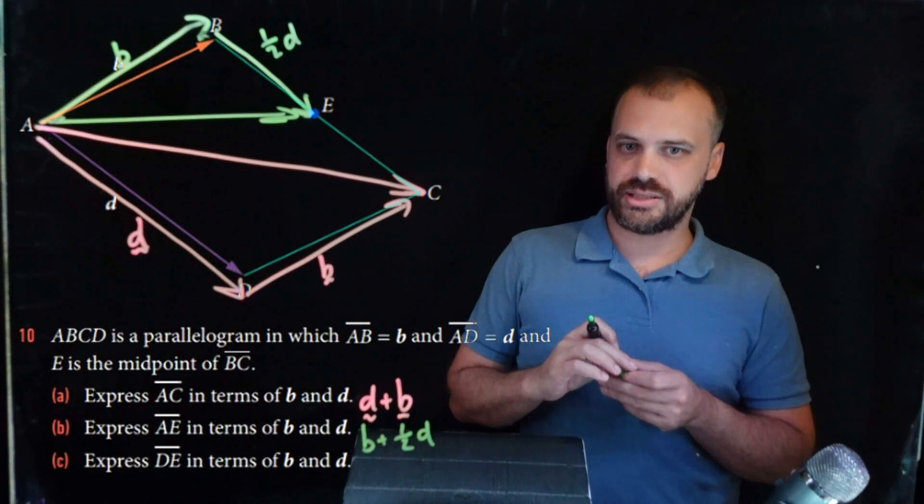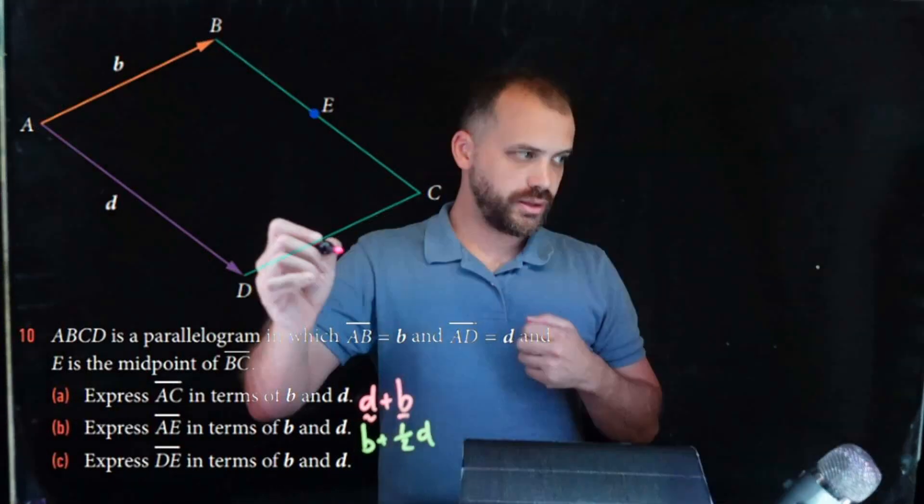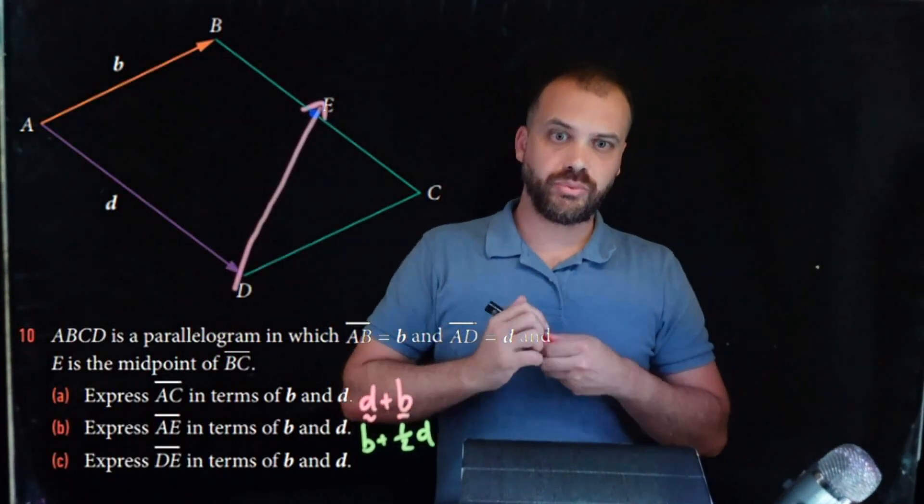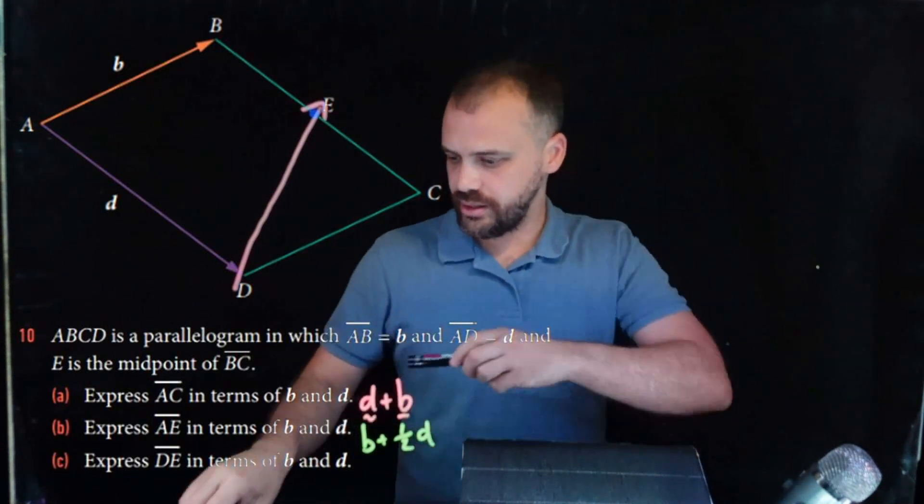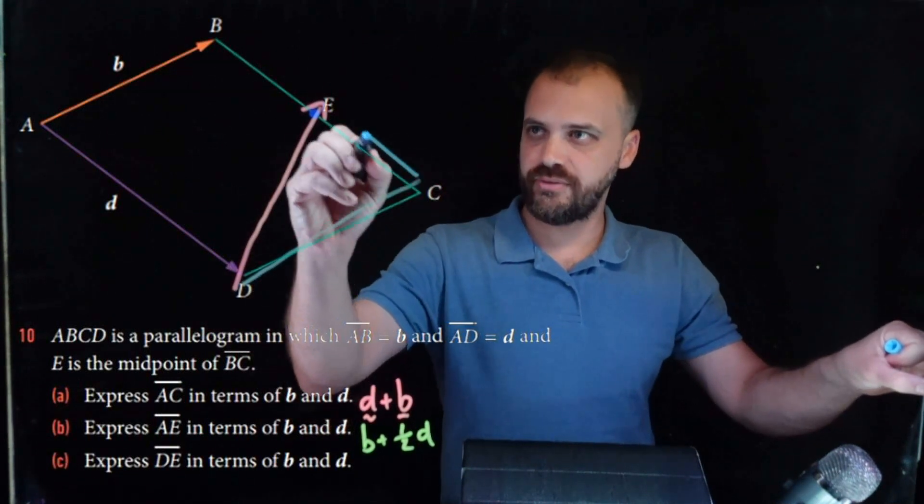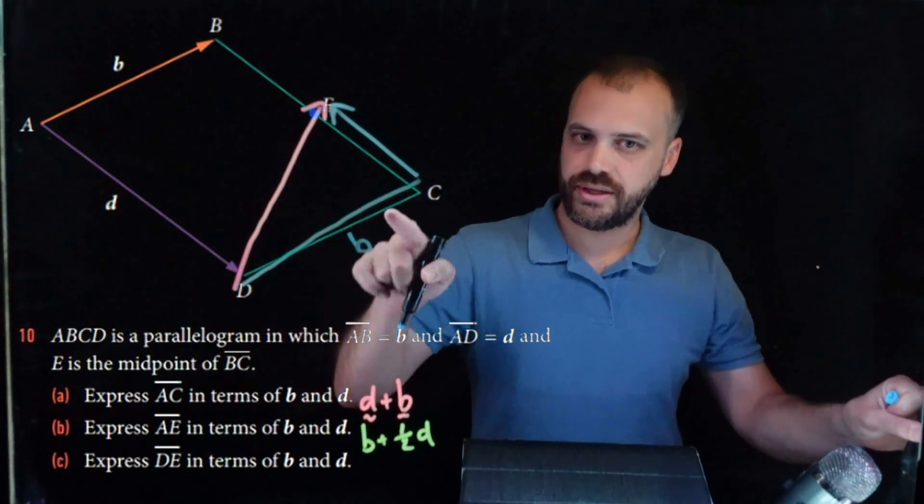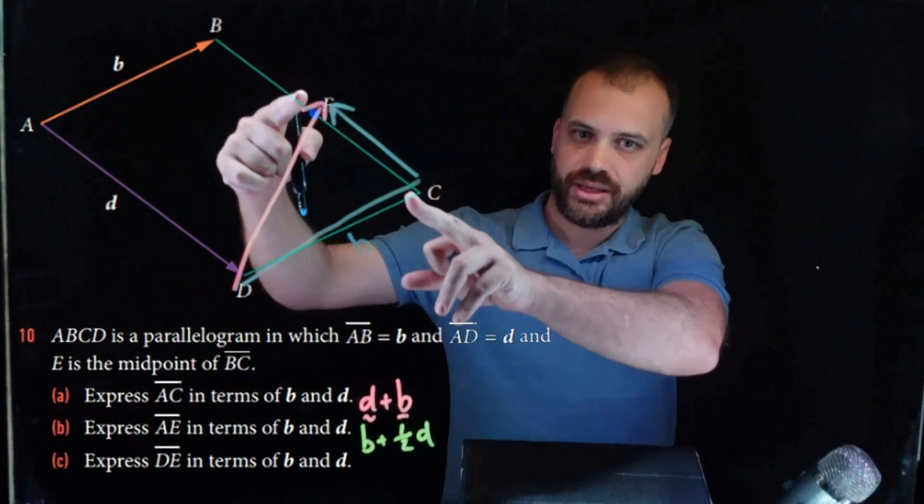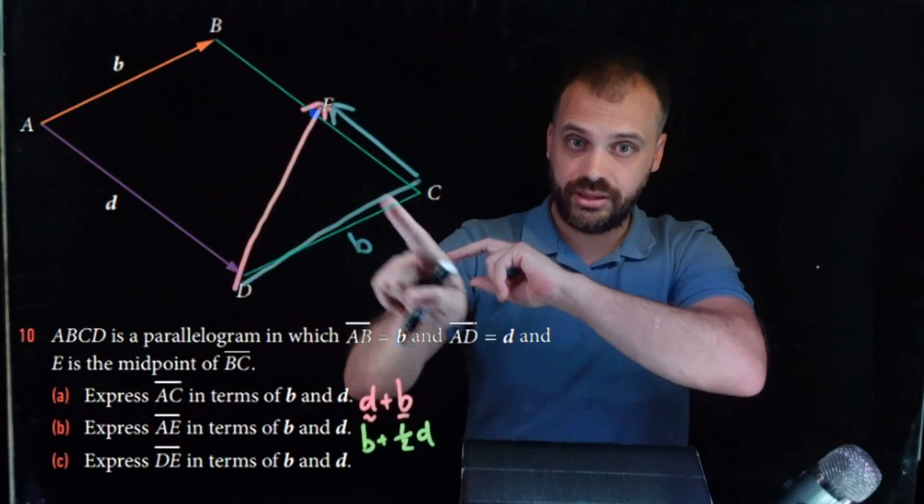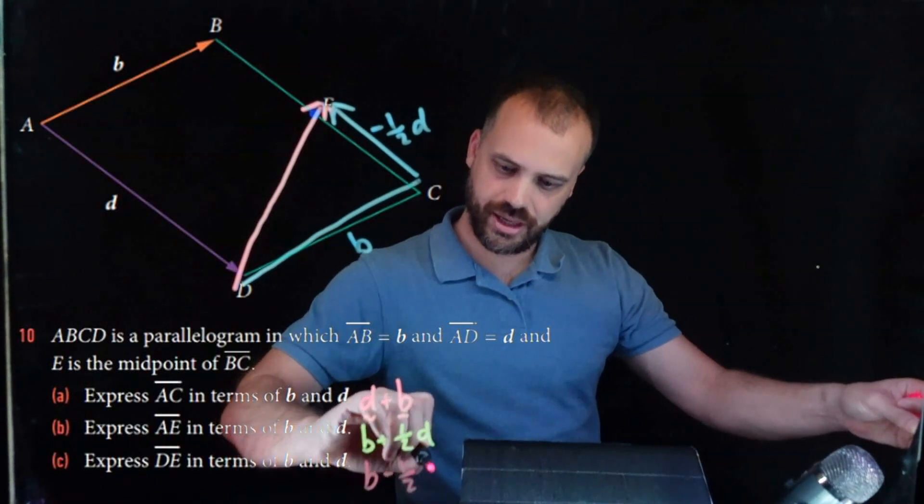And then finally, it says express DE in terms of B and D. So we're starting at D and moving up to E. Now we might solve this in two ways. One way would be to follow this vector like that, and that vector like that. Now, if we were following that vector followed by that vector, this vector is B, and this vector in this direction is D, half of D, but in the opposite direction. D is going that way, that's going that way. So this is negative half D. So that's our solution, B minus half D.